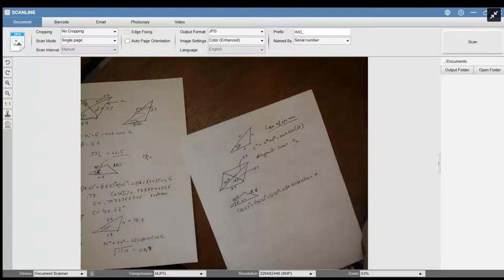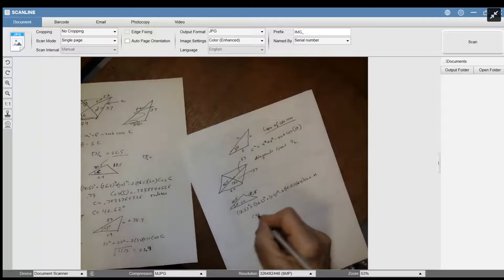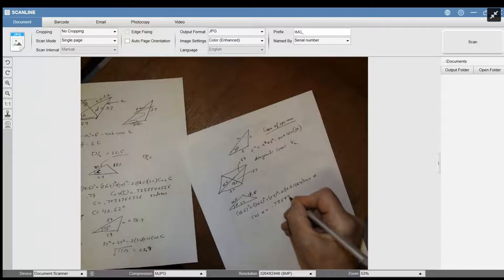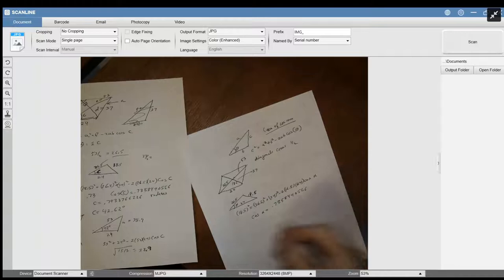And so if you do the calculation, you're going to end up with the cosine of alpha equals, I'm going to go fast on this. So if you don't want to, 5, 8, 4, I'll just put the whole thing out, 9, 0, 5, 6, 6. That's the cosine of alpha, which makes alpha approximately equal to 42.62 degrees.